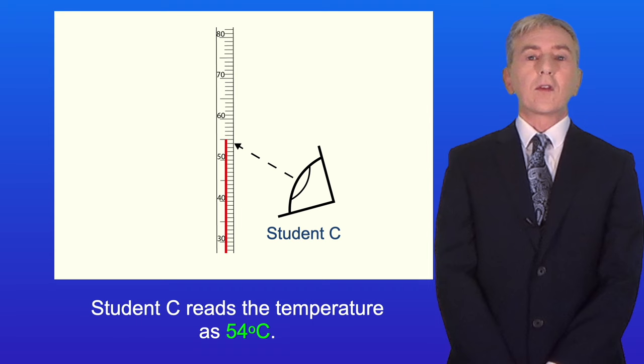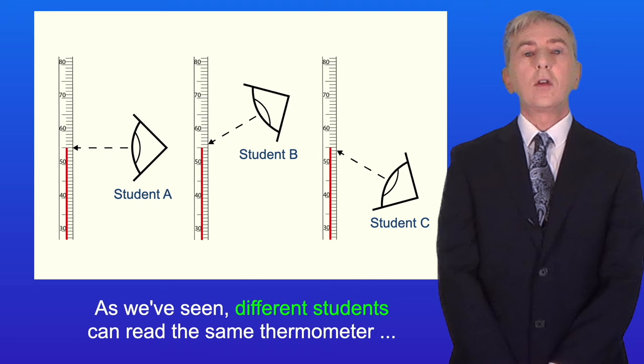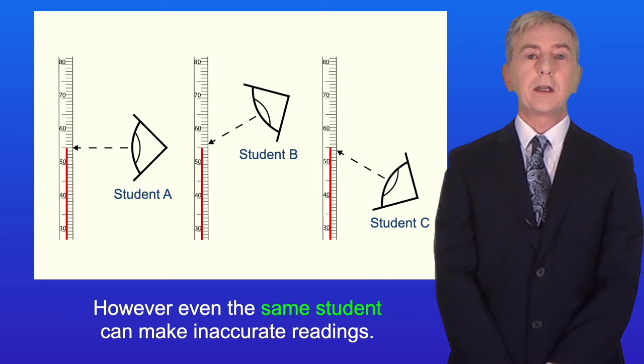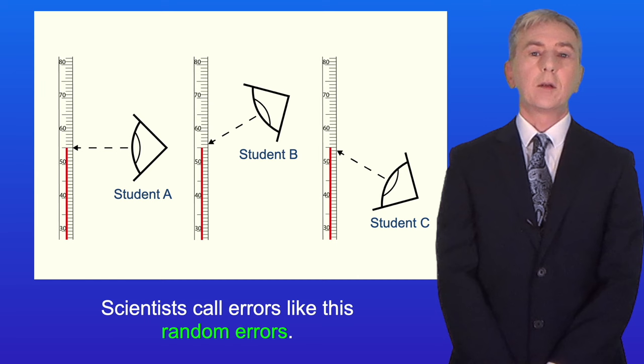As we've seen, different students can read the same thermometer from different angles. And because of parallax error this leads to inaccurate readings. However, even the same student can make inaccurate readings. It's very unlikely that student A will always read the thermometer correctly every single time they use it. Scientists call errors like this random errors and random errors cause random variations in our results.